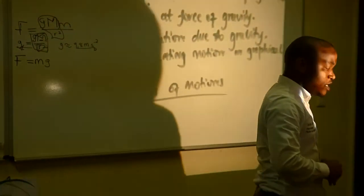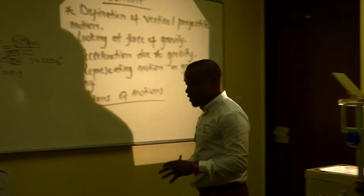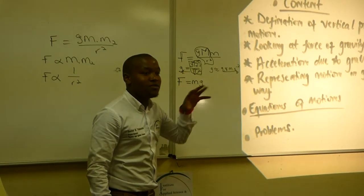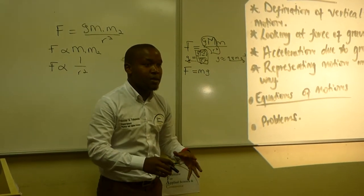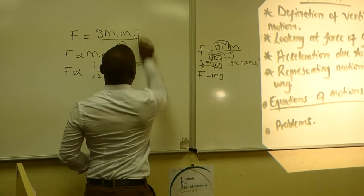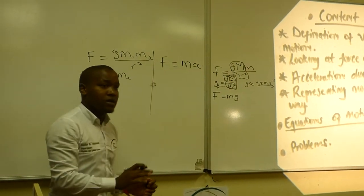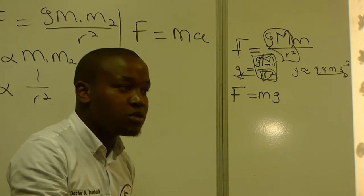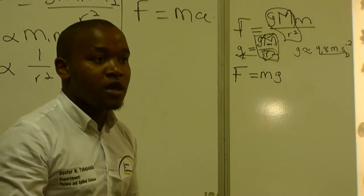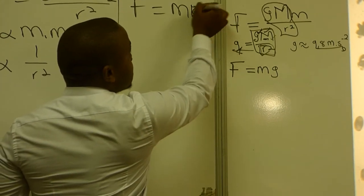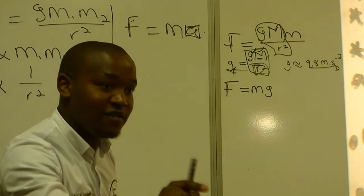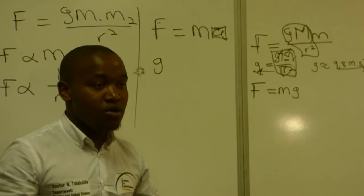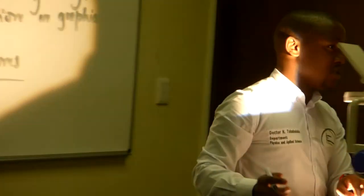Let's deal with acceleration due to gravity. I've already touched on that — gravitational acceleration is approximately 9.8 meters per second squared, and it is constant. For any object closer to the surface of the Earth, the acceleration due to gravity acting on it is denoted by g and is constant. According to Newton 2, when a force is applied on an object, the object will accelerate in the direction of the force.